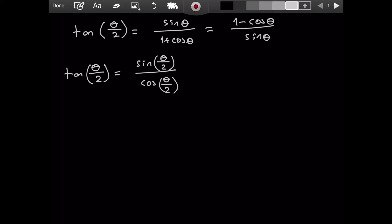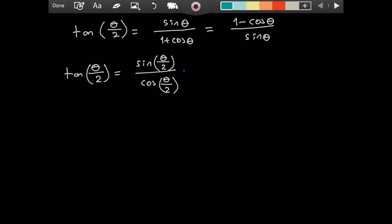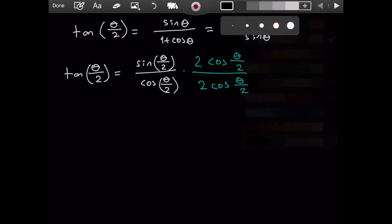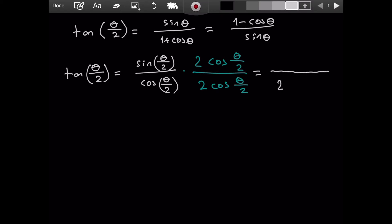Now, I'm going to do an interesting thing. I will multiply the top and the bottom by 2 cosine of theta over 2. On the denominator, it is fairly simple — we have 2 and then cosine of theta over 2 times cosine of theta over 2, which is just cosine squared of theta over 2.